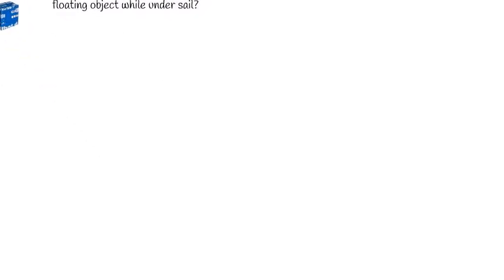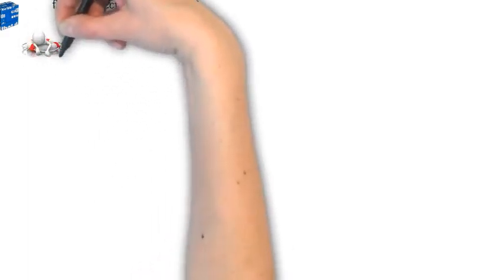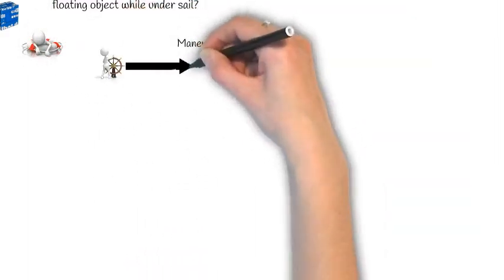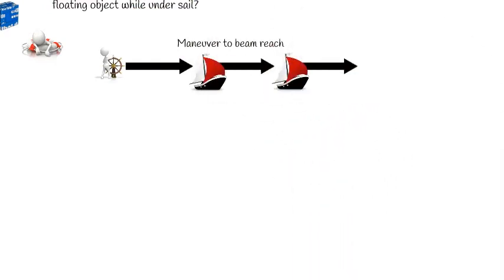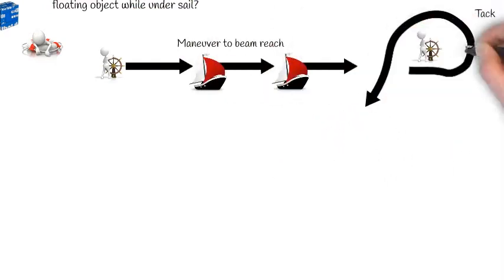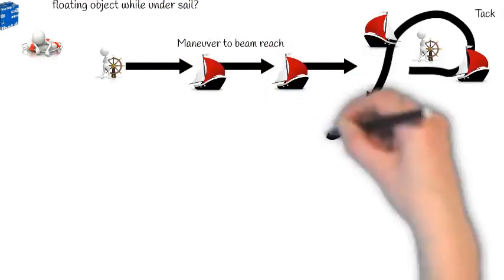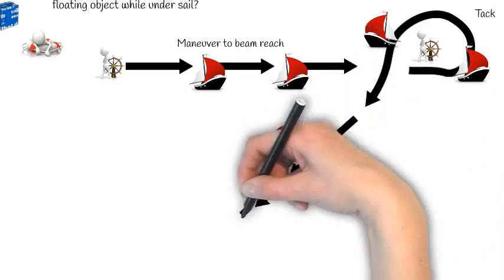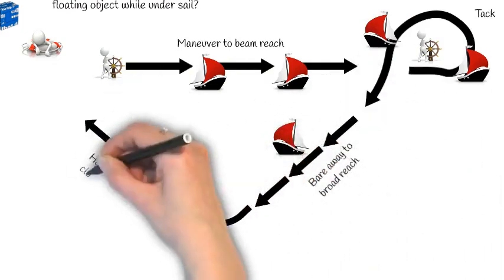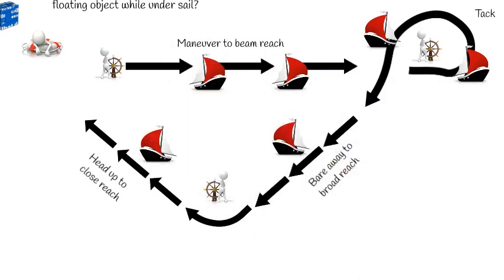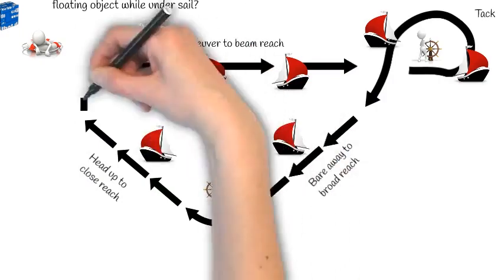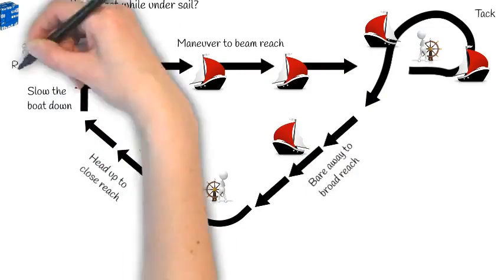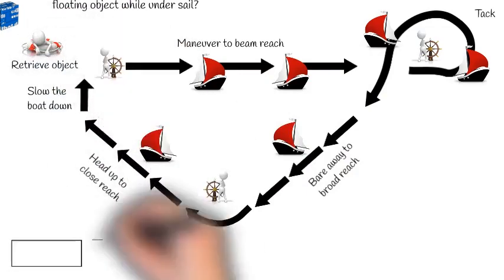The process that is used can be described as containing these steps. First, maneuver the boat to a beam reach. Second, perform a tack. Third, bear away to a broad reach. Fourth, head up to a close reach. Fifth, slow the boat down as you approach the object. And finally, retrieve the object.